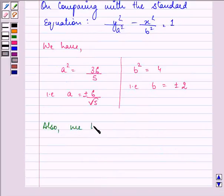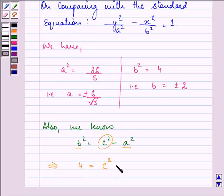Now we know that b² = c² - a². So with the help of the knowledge of b² and a² we can find out c² and hence the value of c. So it means b² is 4, c² is what we need to find out minus a².